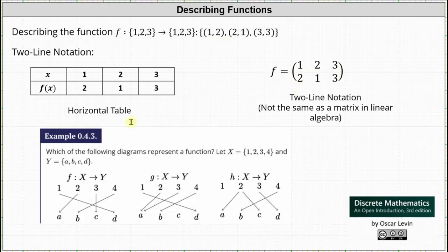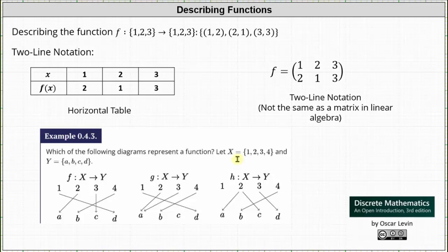Now let's look at an example where we're asked which of the following diagrams represent a function. Let X equal the set with elements one, two, three, and four, and Y equal the set with elements a, b, c, and d. Each of the rules maps X to Y, where if it's a function, X is the domain and Y is the codomain. You may want to pause the video and analyze the relations or rules to determine which are functions — remember, if a relation is a function, every input must have exactly one output.